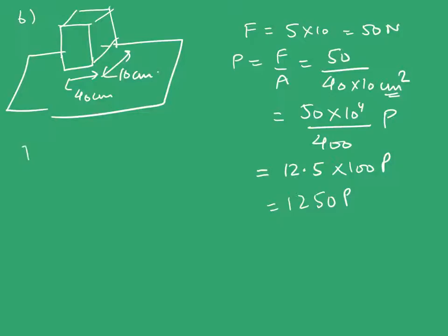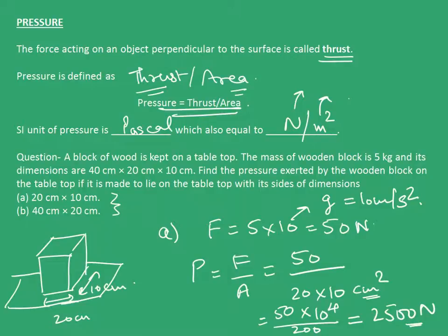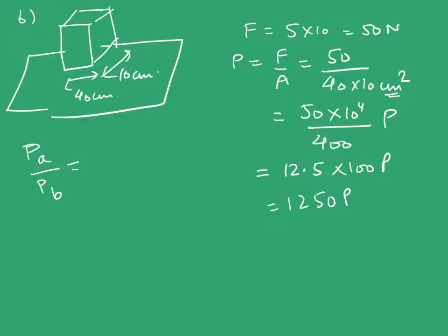Now we calculate the ratio obtained in part A upon part B. The pressure in A upon pressure in B is 2500 pascals/1250 pascals, which is 2. This is because the area in the second case is twice that in the first case.